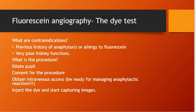To perform fluorescein angiography, first take informed consent from the patient, explaining the procedure, possible complications, and indications. Dilate the pupil with tropicamide and possibly phenylephrine. Obtain intravenous access for injecting the fluorescein dye. At the same time, have all medications ready to manage anaphylactic reaction in case it occurs — it does not happen often, but you need to be prepared.